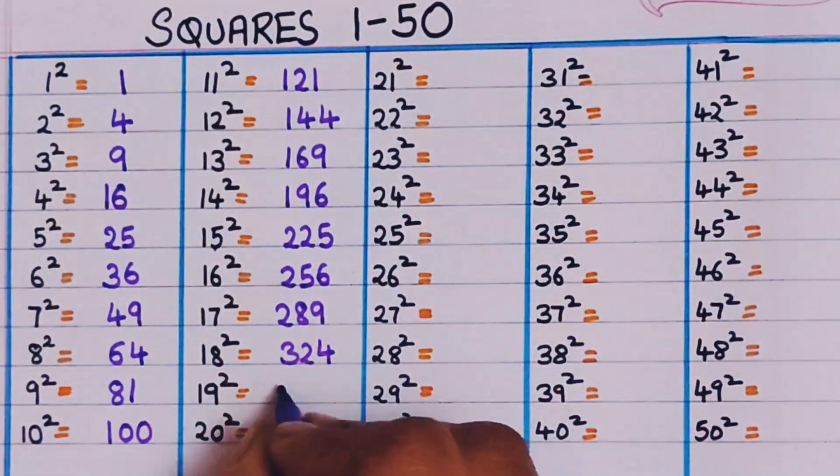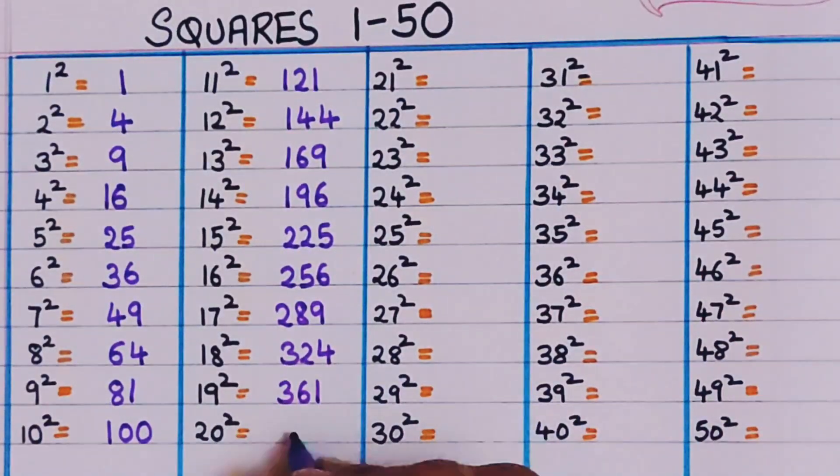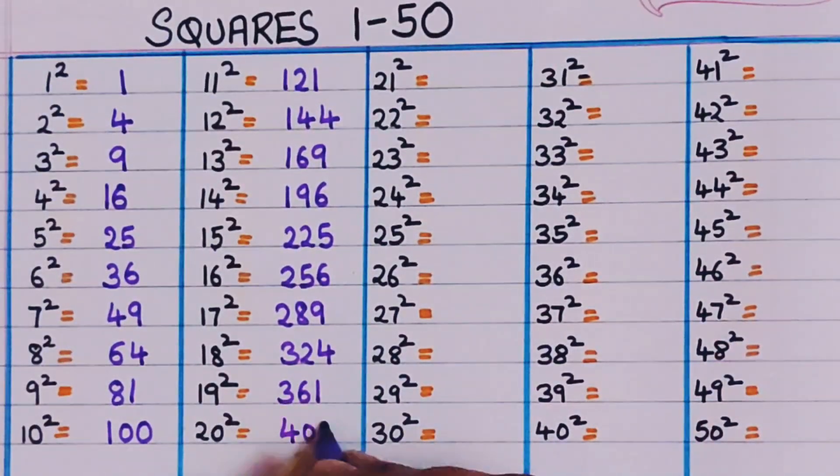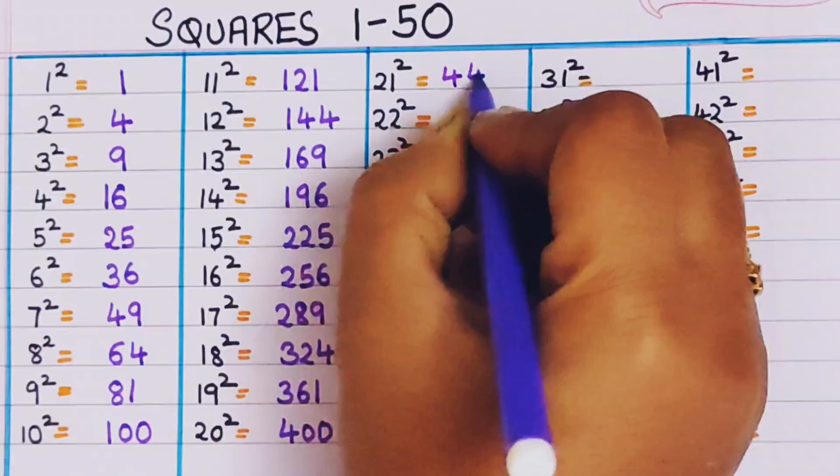19 square, 361. 20 square, 400. 21 square, 441.